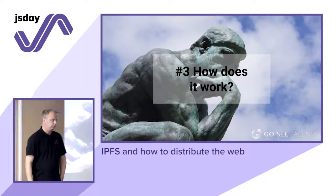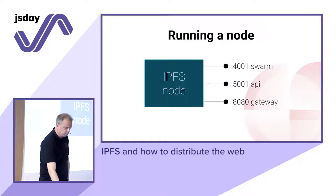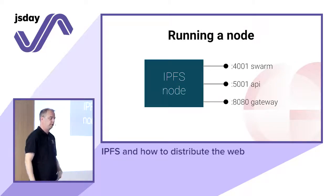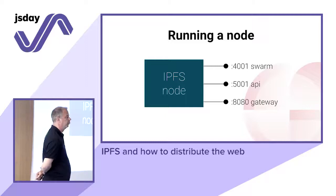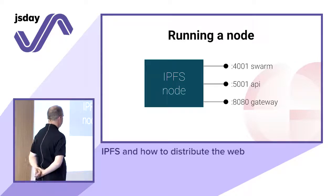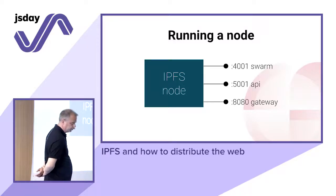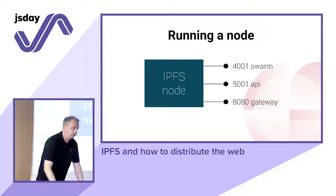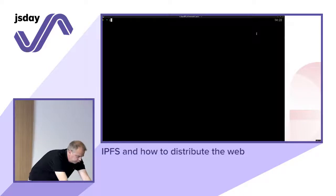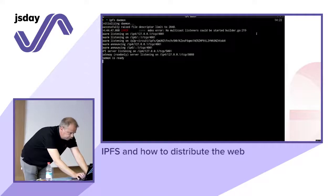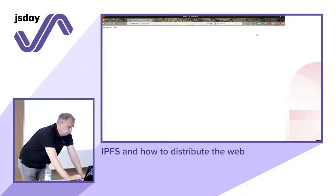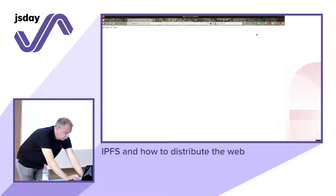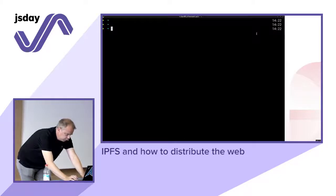So how does it really work? Anyone can run a node, and all the nodes together make a big network. When you start a node, you get three ports opened up: one for the swarm — for interacting with other nodes — and there are also ports for the API and the gateway. So you start up a node, the daemon becomes ready, and then there is a nice little GUI.